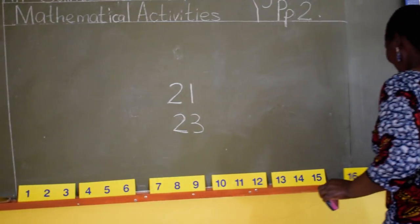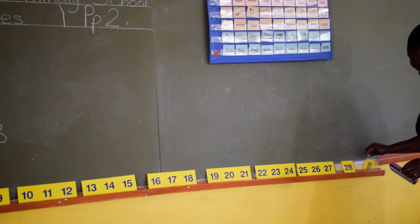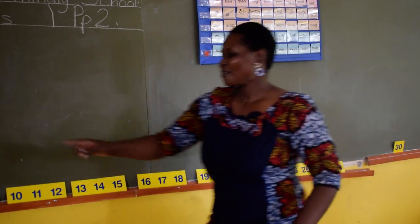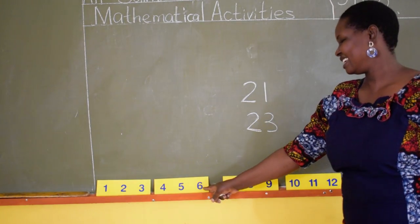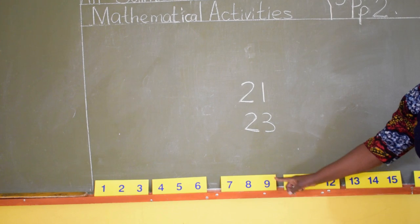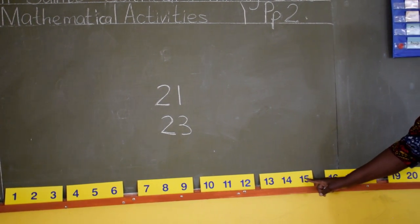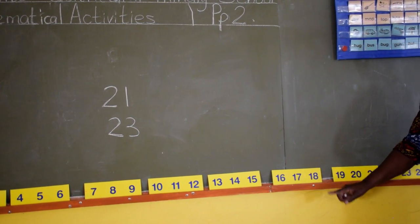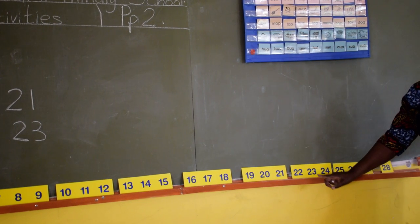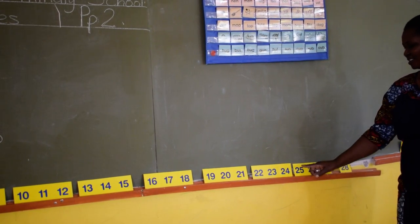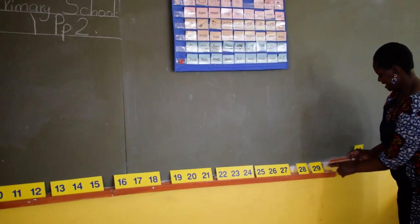I want my numbers, I want my numbers, I want my numbers. 1, 2, 3, 4, 5, 6, 7, 8, 9, 10, 11, 12, 13, 14, 15, 16, 17, 18, 19, 20, 21, 22, 23, 24, 25, 26, 27, 28, 29, and 30.